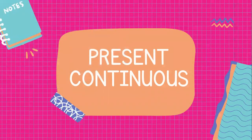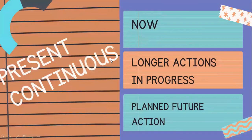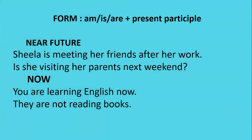Next comes present continuous. When to make use of present continuous tense? You can make use of the word 'now' when you use this tense, when you want to talk about longer actions in progress, and then planned future action. The sentence structure is: am/is/are plus present participle. When you want to talk about near future events, you can go for present continuous.